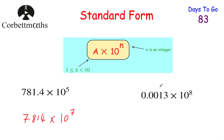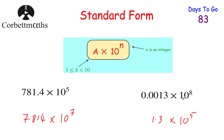Try this one: 0.0013 × 10⁸ — not in Standard Form. We choose 1.3 as our front number. Going from 0.0013 to 1.3 moves the digits 3 columns to the left, making it 1,000 times bigger. So we must divide the power part by 1,000, reducing the power by 3: 10⁸ becomes 10⁵. The answer is 1.3 × 10⁵.